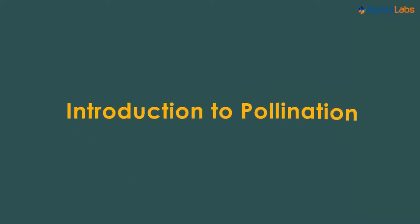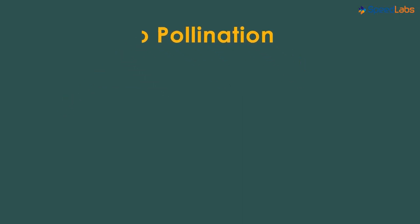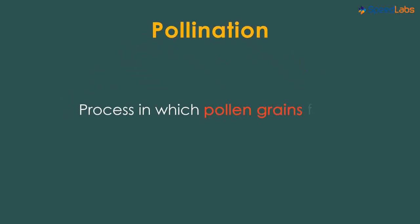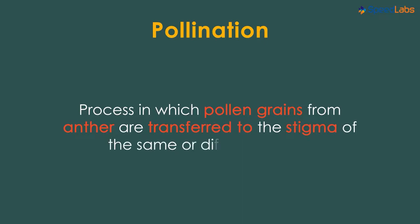We concluded the previous lesson with an introduction about pollination. It's simply the process in which pollen grains from the anther are transferred to the stigma of the same flower, or for that matter, stigma of any other flower.